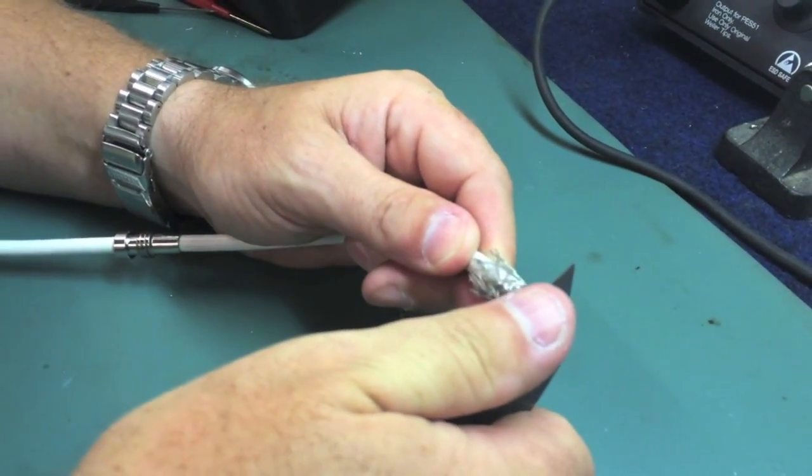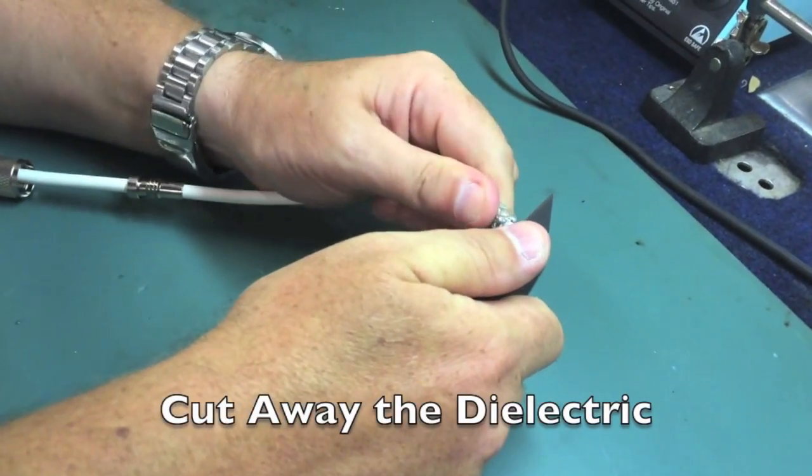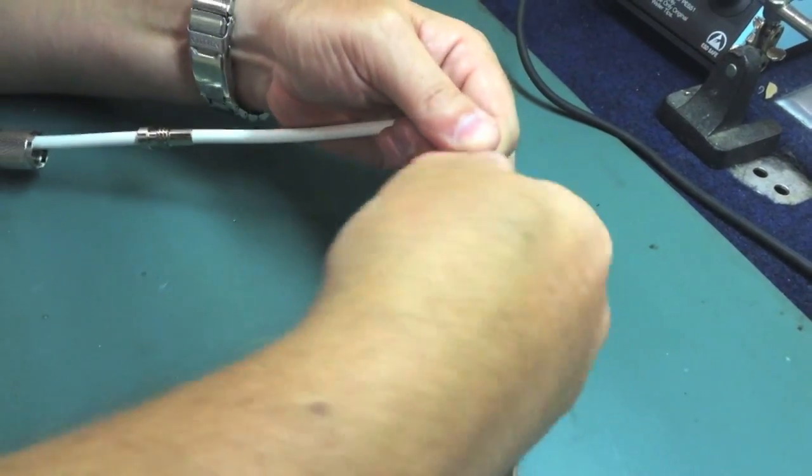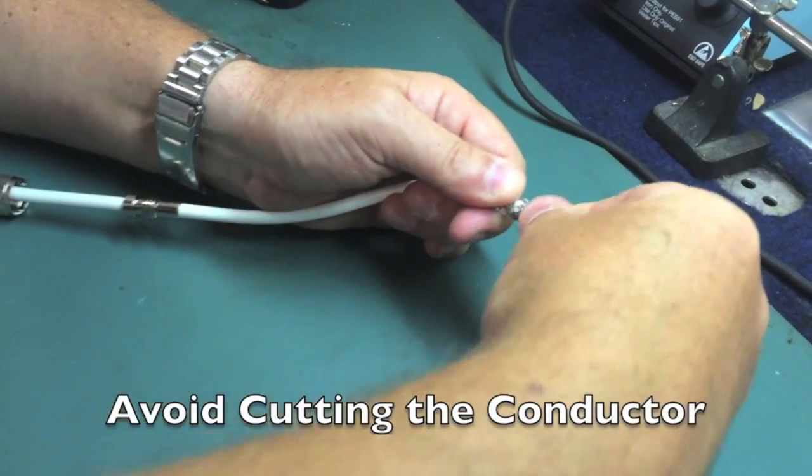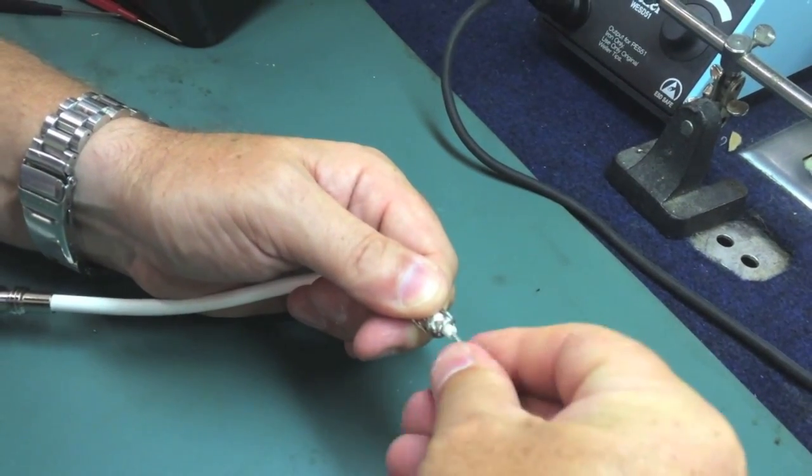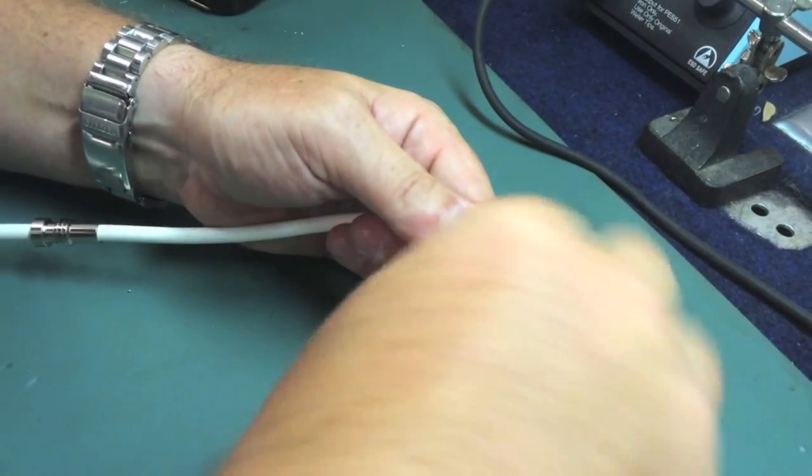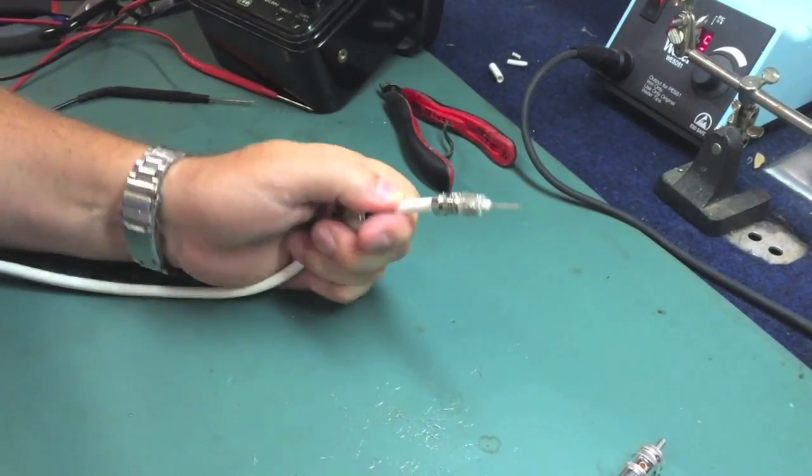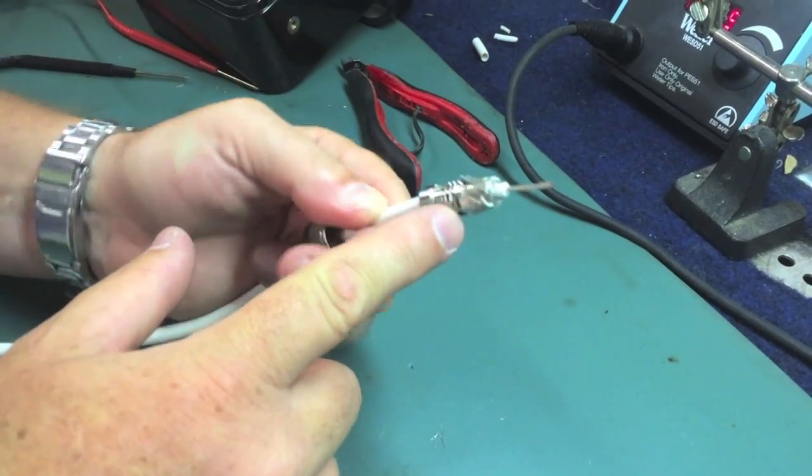Next thing you want to do is you want to cut off the insulating dielectric. Again, taking care not to cut the center pin, the center conductor here. What I like to do is I like to twist this as I'm pulling it off because that actually neatly twists the cable so it makes it nice and neat. What you'll see is that I've taken the time and I've trimmed the shield back so that it doesn't interfere with the threads on the adapter.